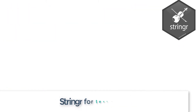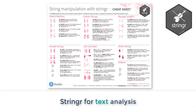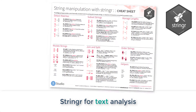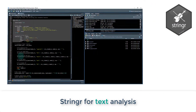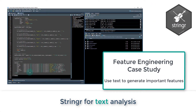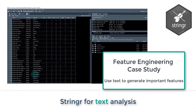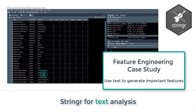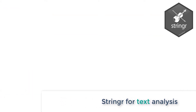Next, we switch to Stringer for text analysis. We learn the fundamentals of the Stringer package, including working with the most common cheat sheet functions. We then switch gears, performing a live recorded feature engineering case study that you won't want to miss. It's incredibly valuable.